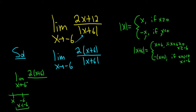So if x is less than negative 6, we're using this piece over here on the right. So negative x plus 6. So in the bottom we have negative x plus 6. These cancel.